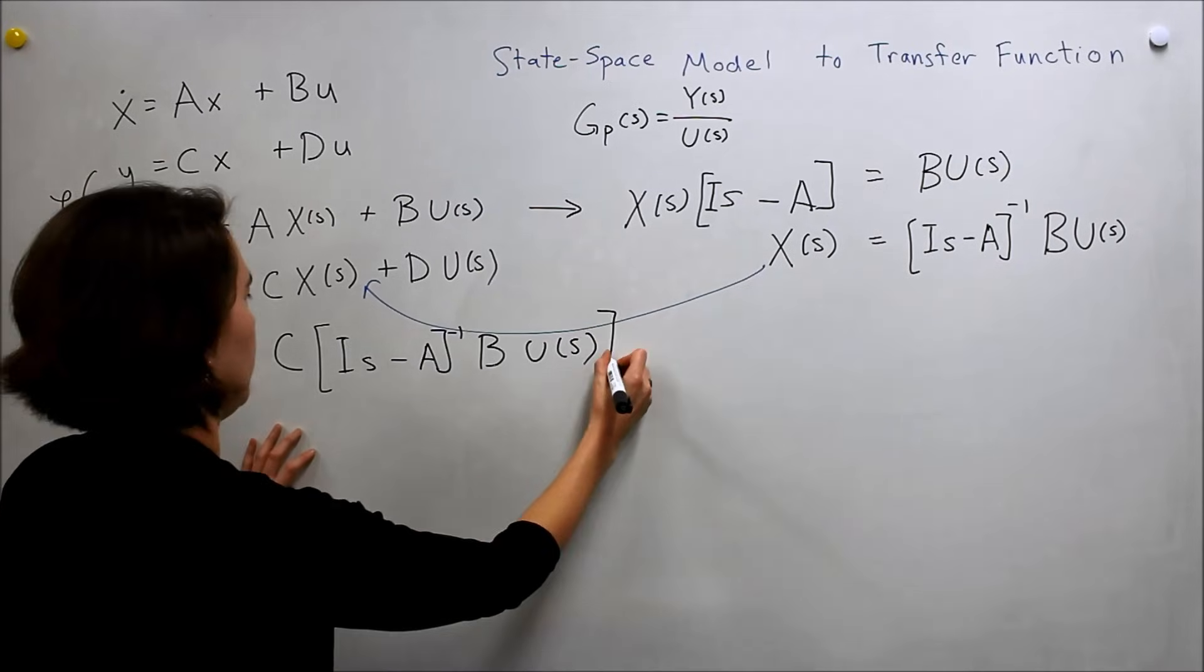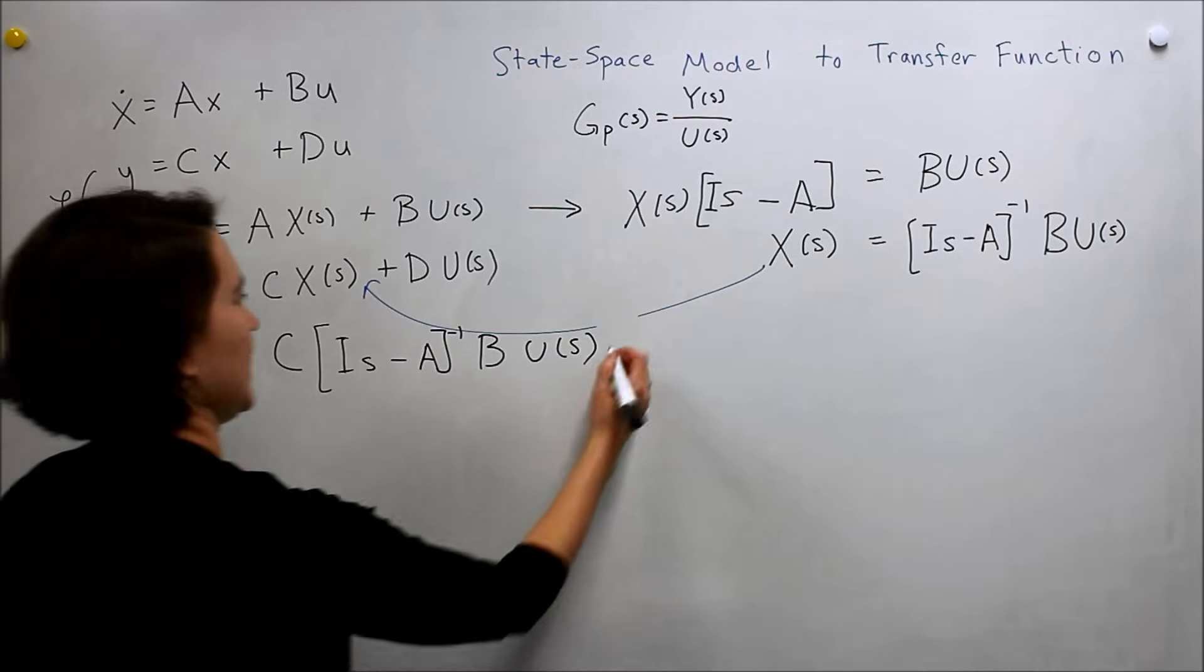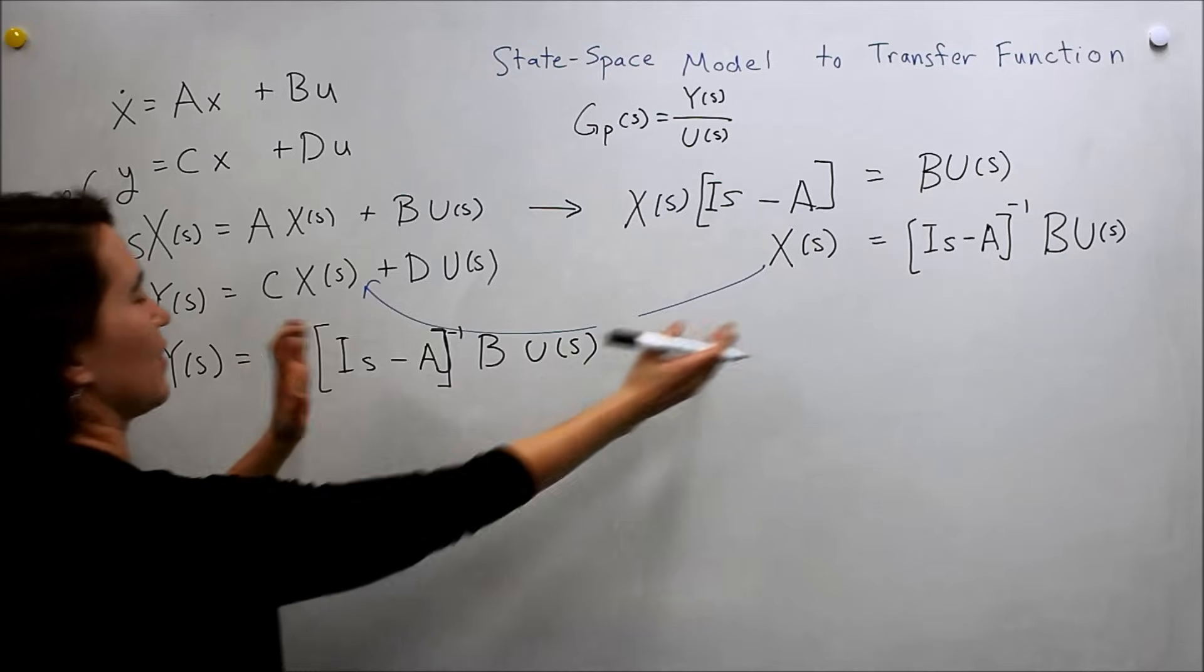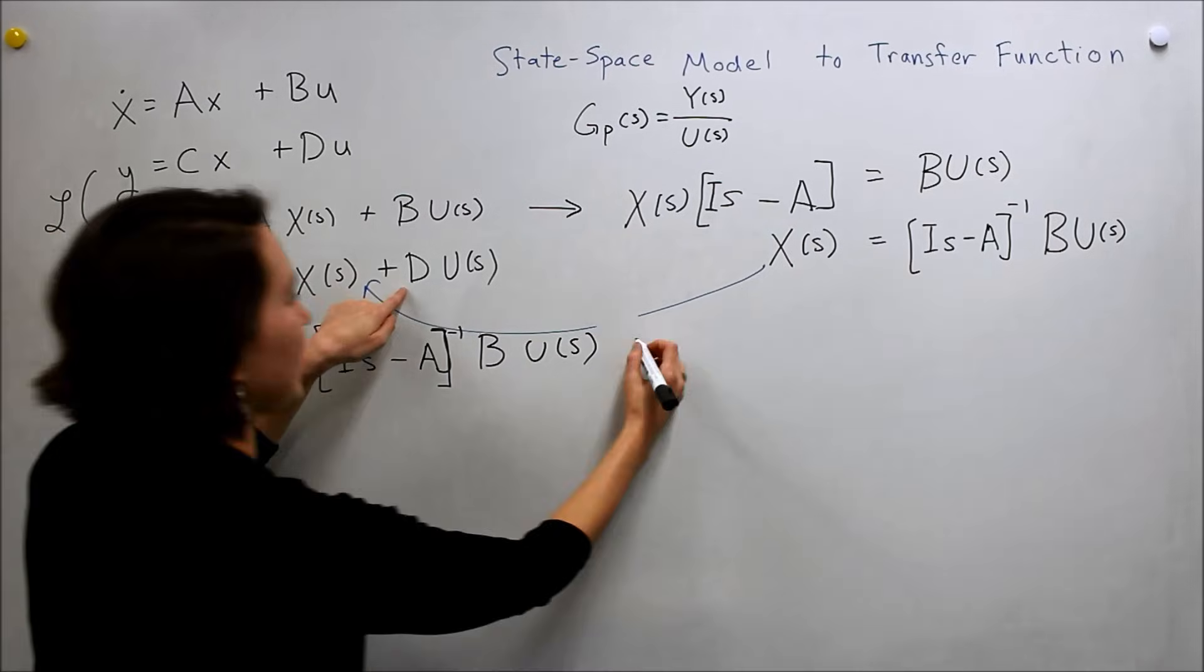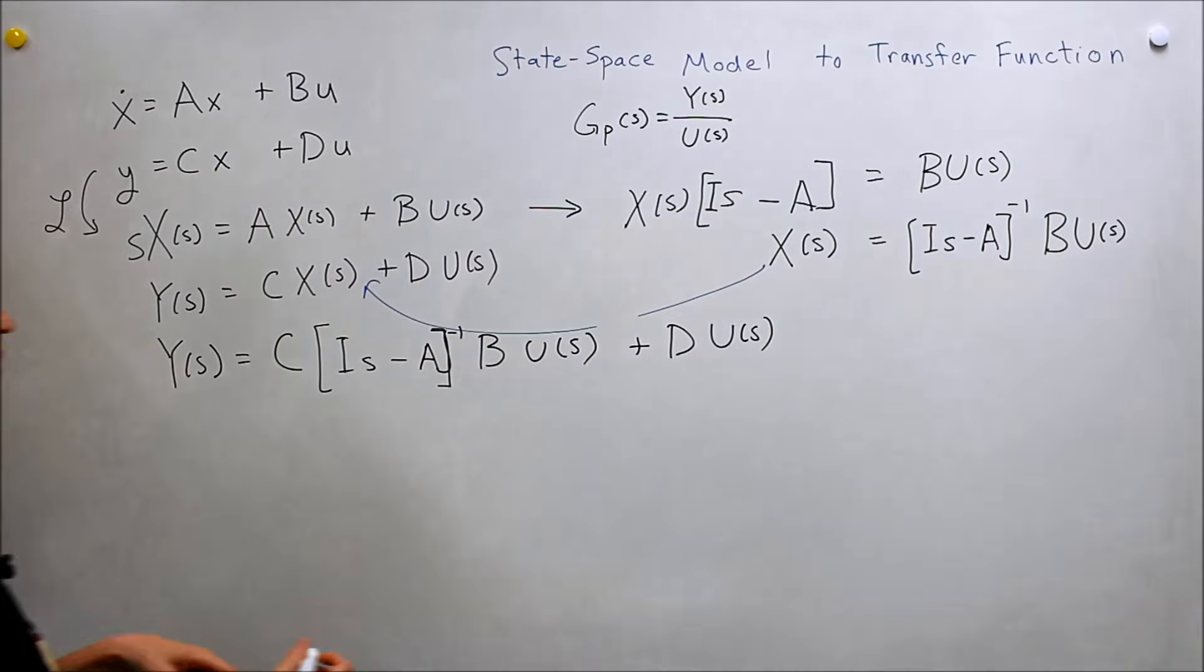I guess we'll close it. Oh, no. There's not an extra bracket there, sorry. This is a bracket here. And then this, we've substituted x in here. Now we need to add d and u, u of s.